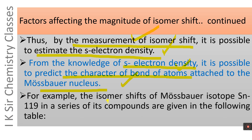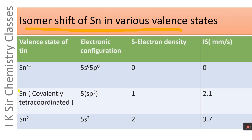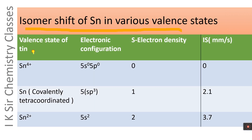As an example, the isomer shifts of Mössbauer isotope Sn-119 in a series of its compounds are given in the following table. The table lists the valence state of tin, its electronic configuration, s electron density, and isomer shift expressed in millimeters per second.